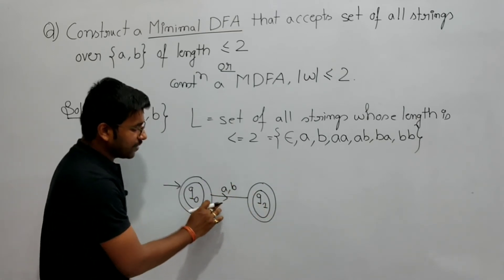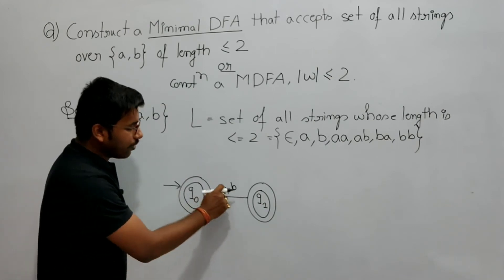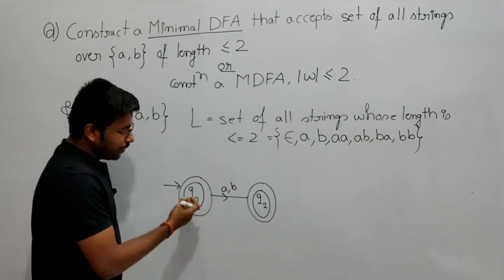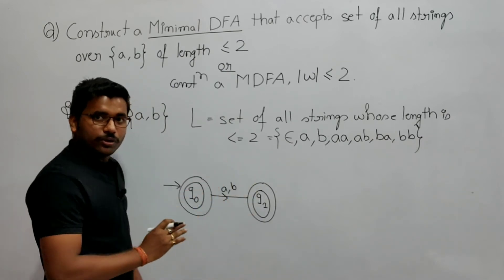So this is a two transitions, just I am indicating in one by giving comma. So q0 by getting a is going to q1. Also if q0 will get b, it will go to q1 only.